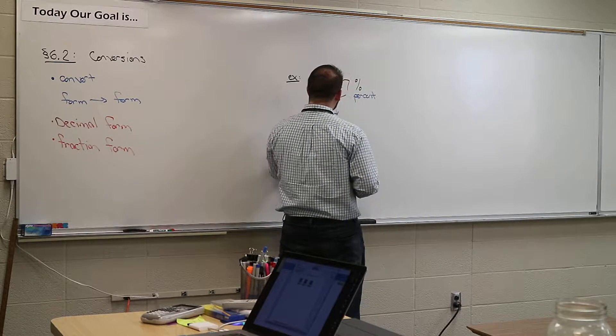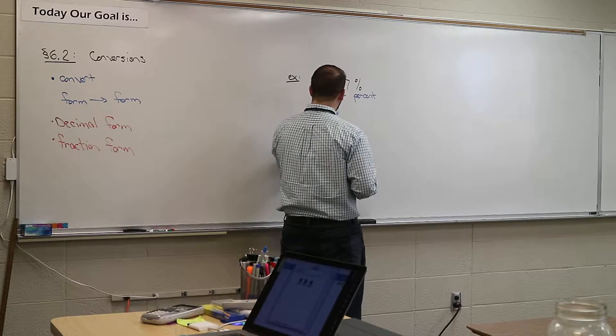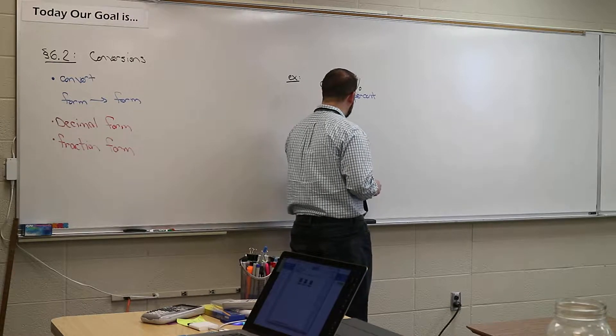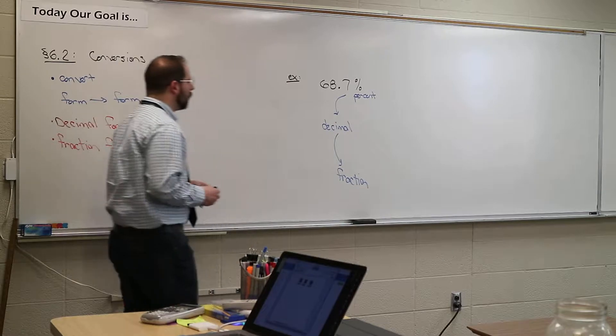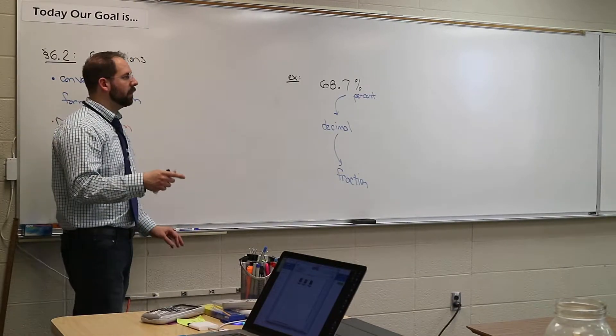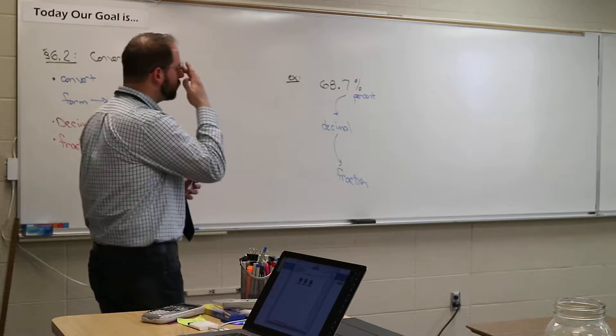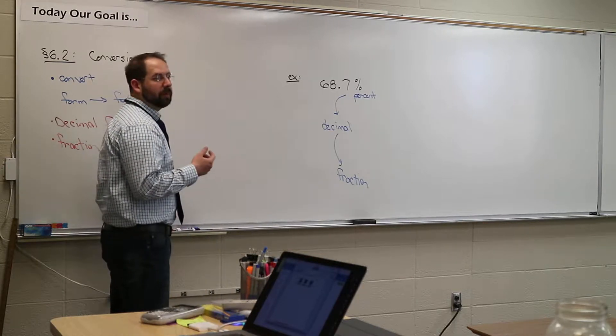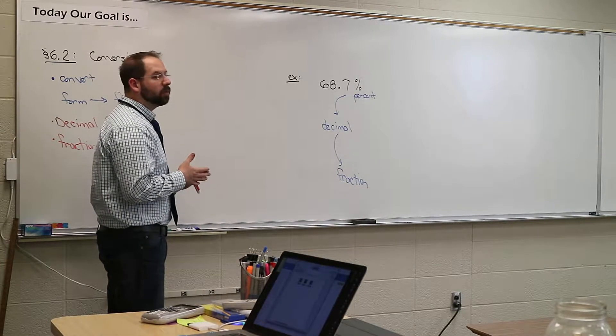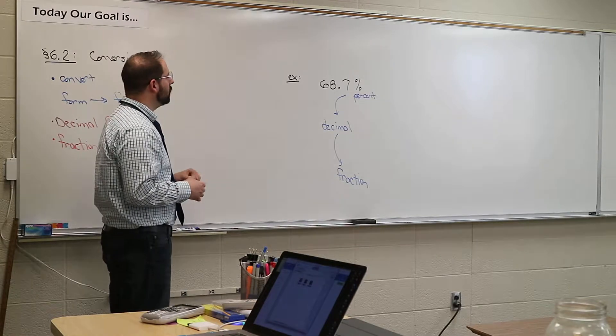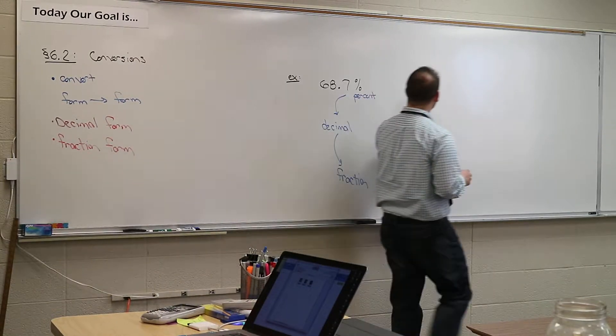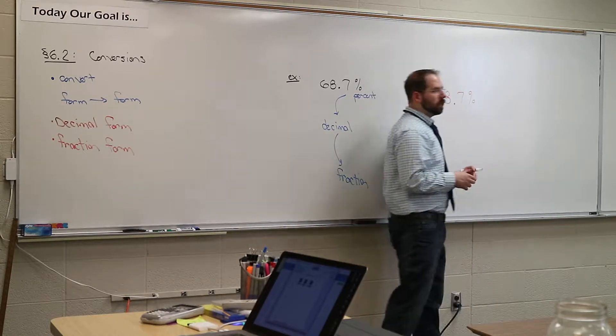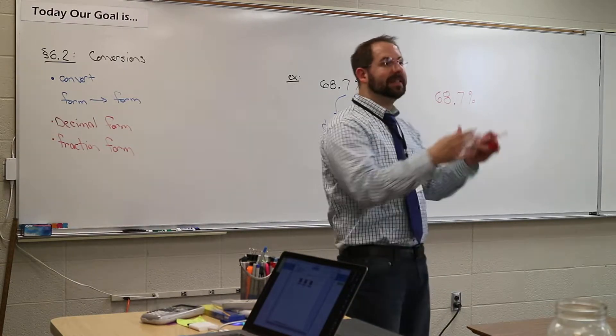And we can talk about the actual percent itself. So what we're going to do is we're going to try to take this. This is written as a percent. You can see it's written as a percent. We're going to write it as a decimal, and then we're going to try to see can we get that to fraction form. What we need to do is to change it back to decimal form. Here's how you take a percent. If you have a percent and you want to take it back to decimal, you move this decimal two spots to the left.